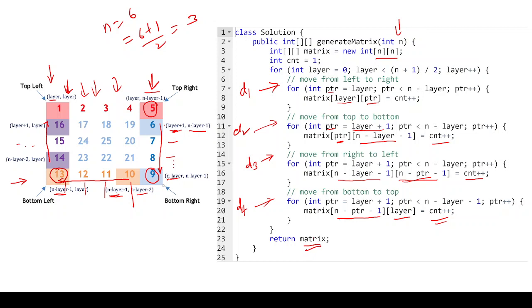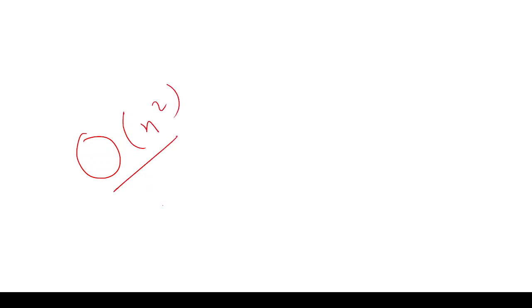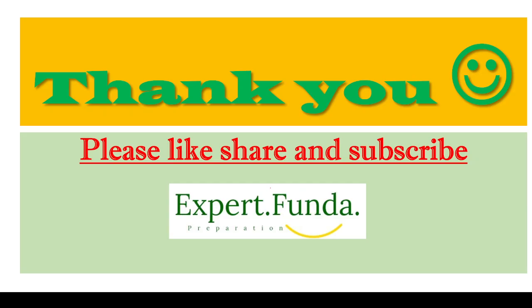After completing all layers by iterating through all four directions, we return the matrix. For time complexity: since we are visiting all n×n elements, TC = O(n²). For space complexity: we are not using any extra space, so SC = O(1). Thank you for watching — please subscribe to the channel for more videos.